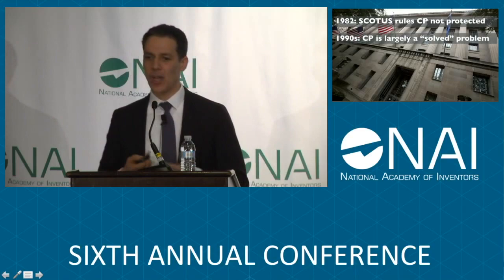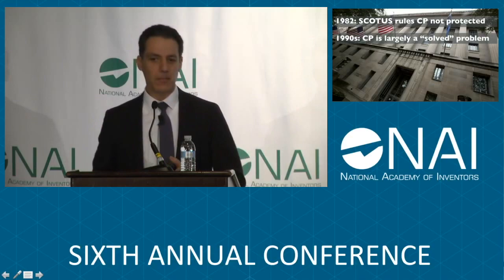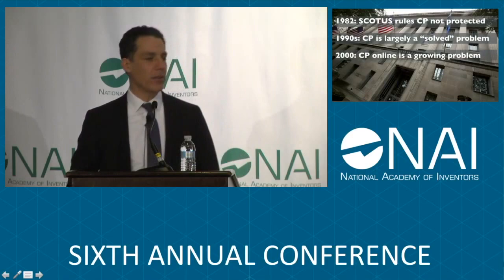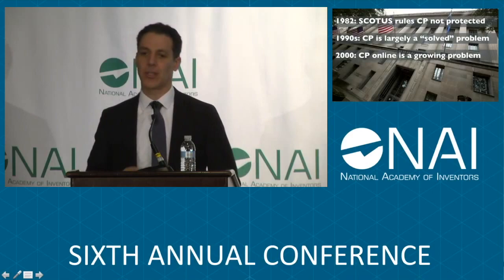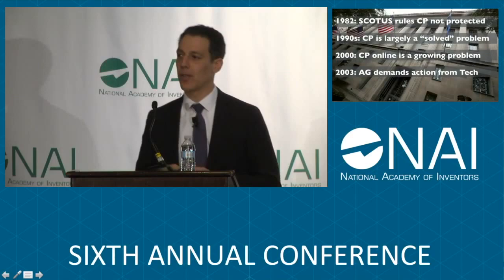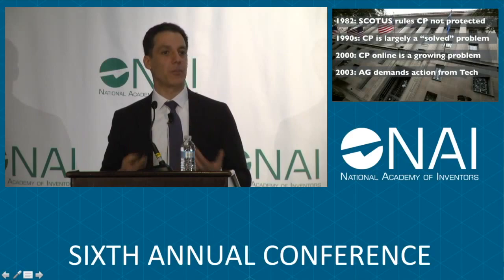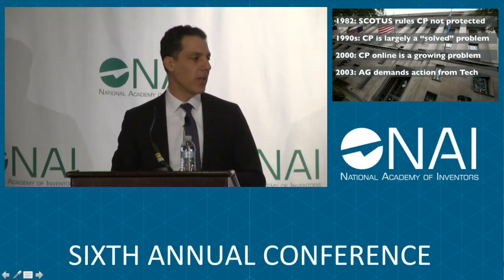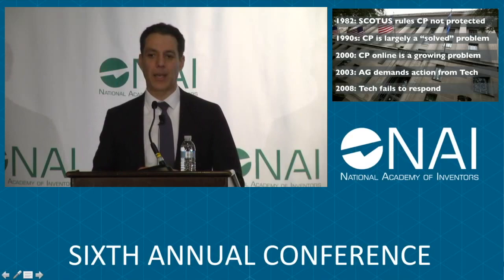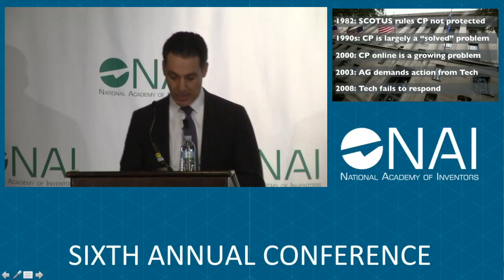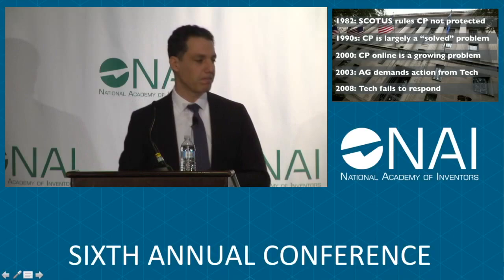By 1990, NCMEC reported that child pornography was more or less a solved problem. It was very hard to find, production decreased, consumption decreased, and the problem essentially went away — the law worked. By the early 2000s, however, with the rise of the Internet, we saw a growing increase in production and distribution again. In 2003, then-Attorney General Ashcroft started demanding that tech companies do something, because their platforms were the dominant place where child pornography was being distributed. By 2008, technology companies had done absolutely nothing. Five years had gone by, the problem had continued to escalate, and we had done absolutely nothing to curb it online.